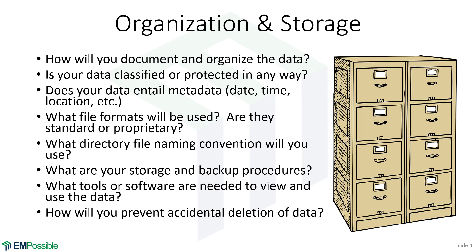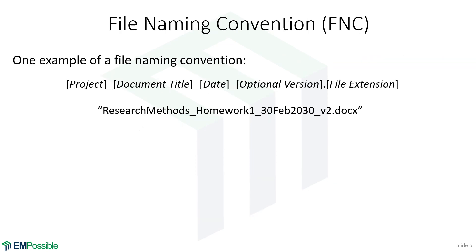How are you going to prevent accidental deletion of data? A big thing there is permissions — and also preventing hackers from getting in, as well as preventing yourself from accidentally deleting things. It's important to communicate with the team what your file naming convention is. Here's one approach I tend to stick to: start the title with the project name or an acronym, follow it with a meaningful title, add a date, and then maybe a version number — like version one or version two — or add a dash with your initials if you edited someone else's file, followed by the file extension.